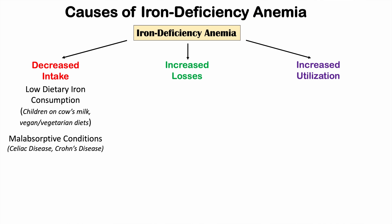Malabsorptive conditions can also lead to iron deficiency — an individual might be eating enough iron but not absorbing it properly. These conditions include celiac disease, which affects the duodenum (the first part of the small intestine where iron is absorbed). Crohn's disease can cause inflammation in the duodenum, leading to absorption issues. Gastrointestinal surgeries that remove parts of the GI tract can also prevent proper iron absorption.